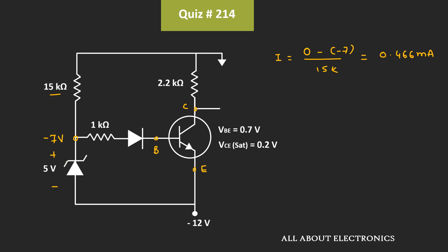That means if this Zener diode is operating in the breakdown region, then the current through this 15kΩ resistor is equal to 0.46mA. Now if this transistor is operating in the active region, then the base-emitter junction is forward biased. The voltage at the emitter is equal to minus 12V, and we have been given that VBE is equal to 0.7V. That means the voltage at the base terminal will be equal to minus 12 plus 0.7V. We have also been given that the voltage drop across the diode is equal to 0.7V. So, the voltage at node Va is equal to minus 12 plus 0.7V plus the voltage drop across this diode, which is 0.7V.